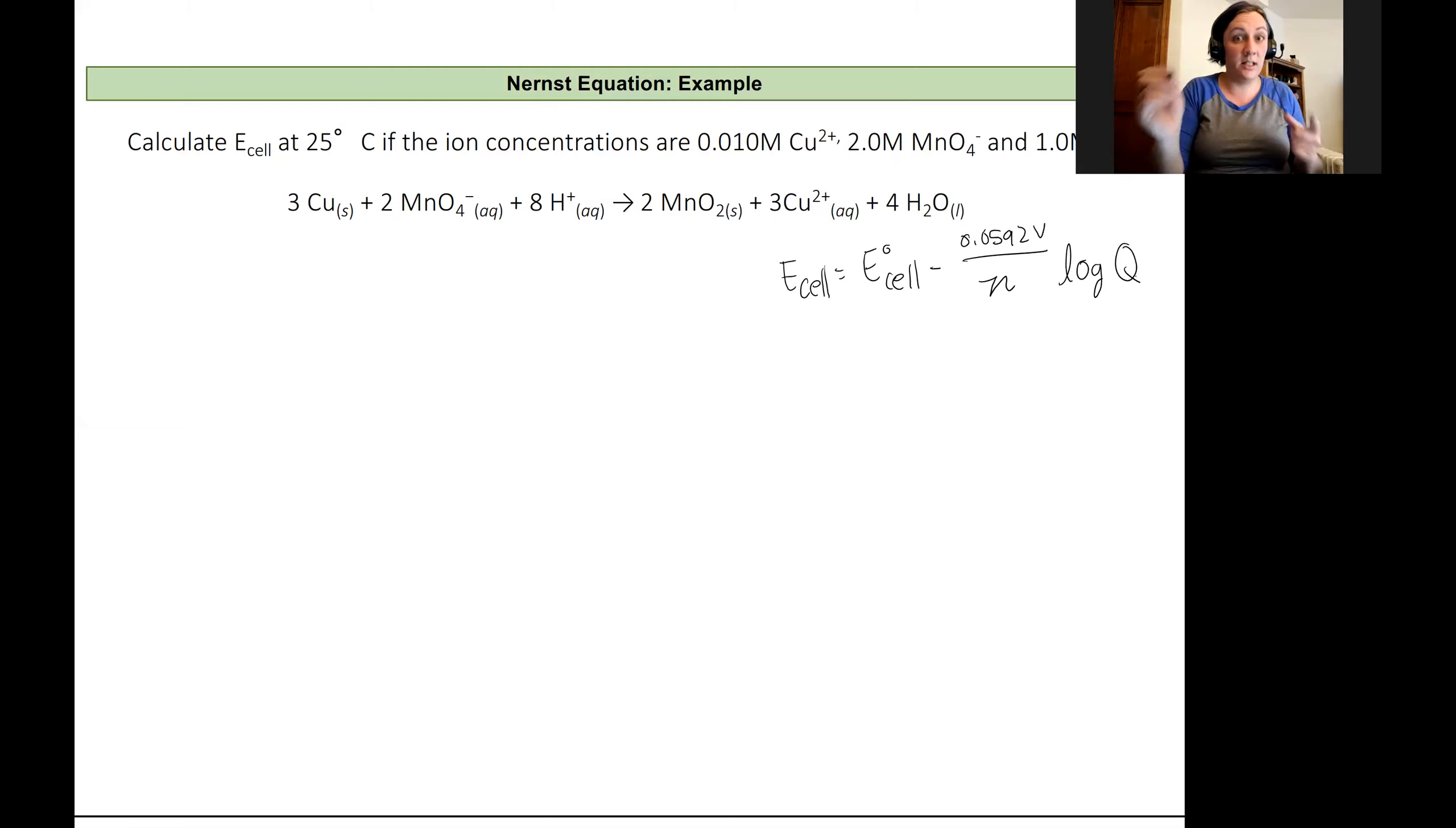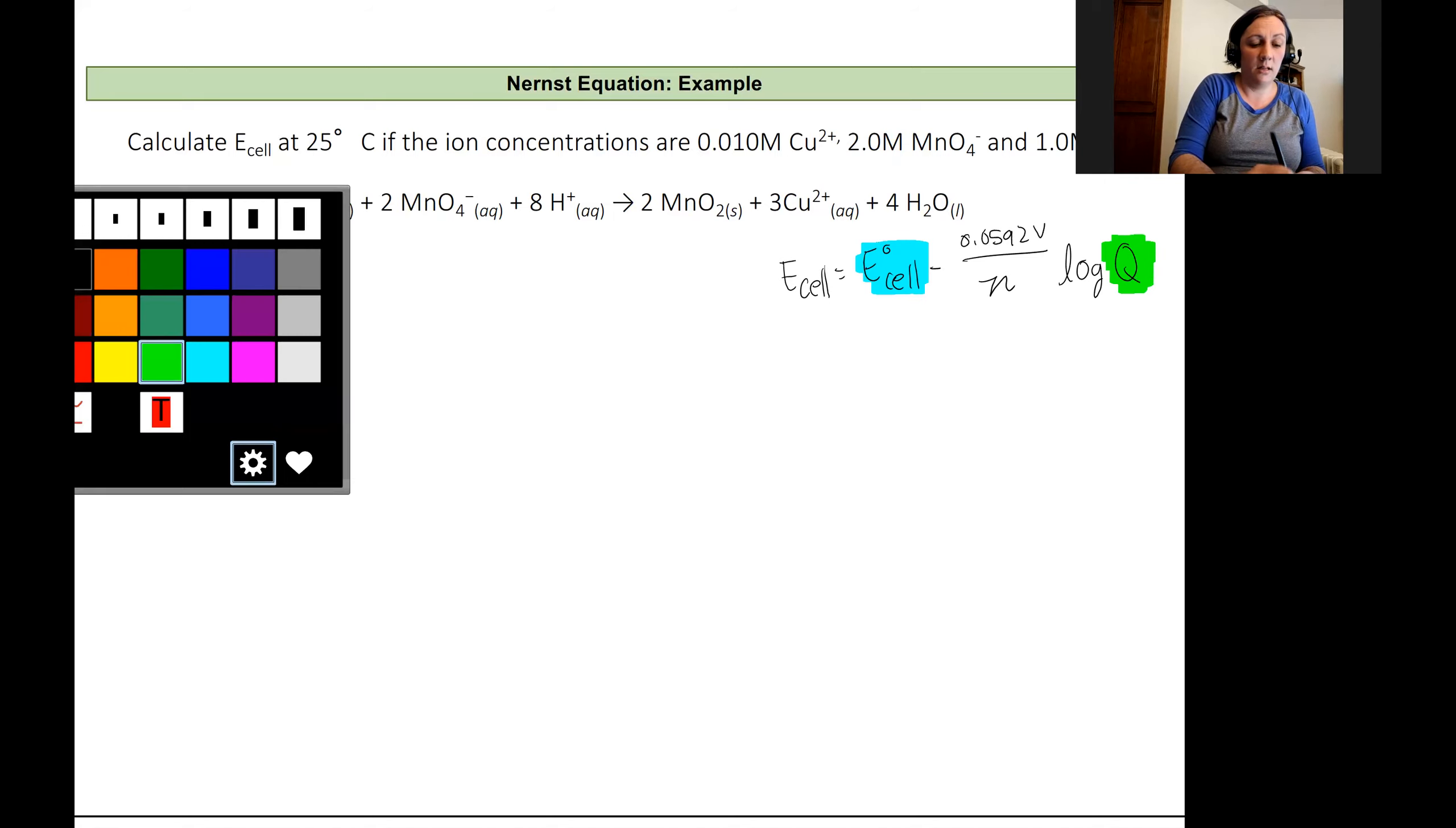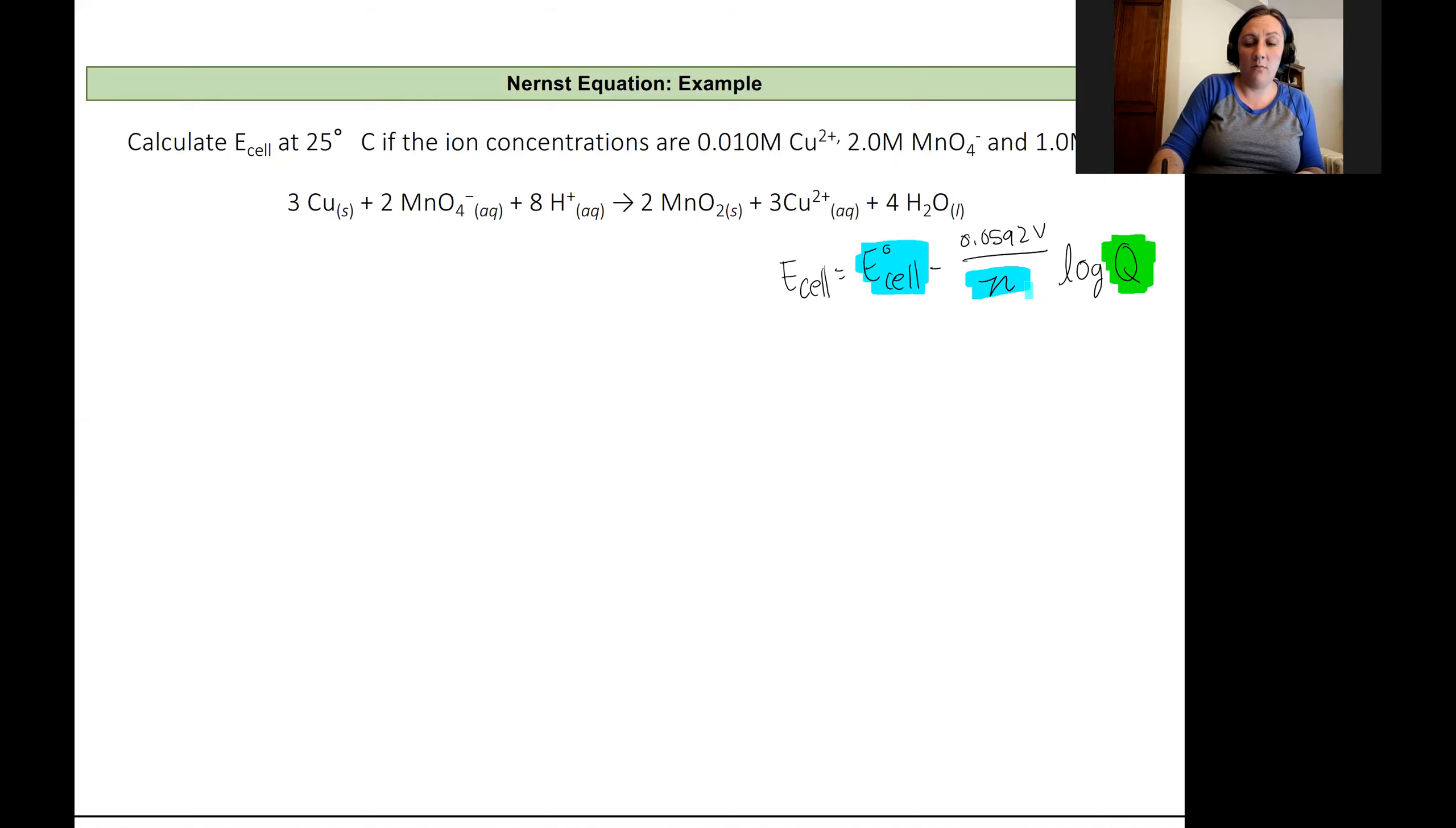So to solve this, we need to figure out what our standard cell potential is, what our reaction quotient is, and what our number of moles are for the electrons in our reaction. Those three components need to be calculated and then plugged into this equation to get the cell potential under these conditions.